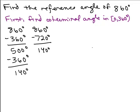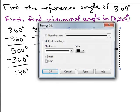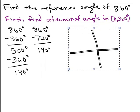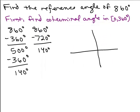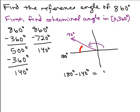Now we find the reference angle of 140 degrees. 140 is less than 180, so it's in quadrant 2. We want to find the acute angle it makes with the x-axis. All the way over is 180 degrees, so we subtract: bigger minus smaller. Most people can figure out in their head that if it's 140, there are 40 more degrees to get to the x-axis — so the reference angle is 40 degrees.